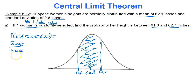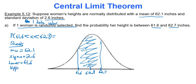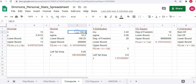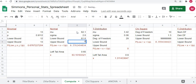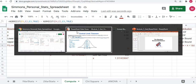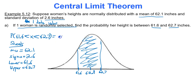We're talking about one data value, so it's business as usual. Mu is 62.1 and sigma is 2.6. Lower bound is 61.6 and upper bound is 62.7. Type those four things into Google Sheets under the normal region in the compute tab. You get 0.1675.